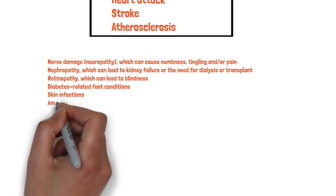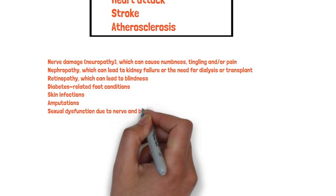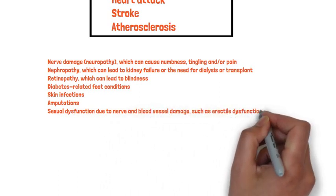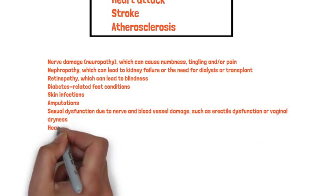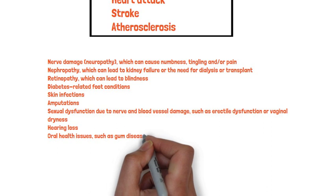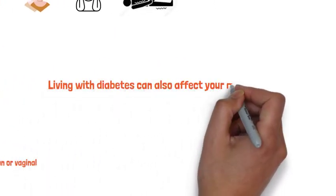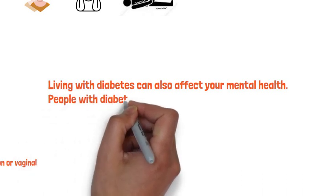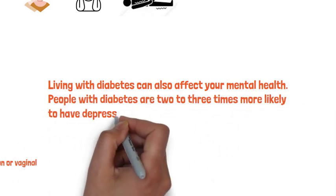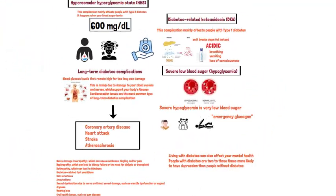Additional complications include diabetic foot conditions, skin infections, and amputations. Sexual dysfunction can occur due to blood vessel damage, such as erectile dysfunction or vaginal dryness. Other issues include hearing loss, oral health problems such as gum disease, and mental health effects. People with diabetes are two to three times more likely to have depression than people without diabetes.